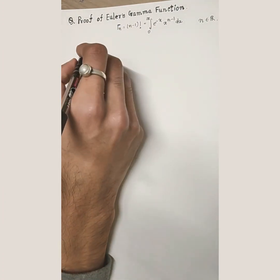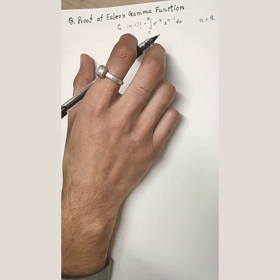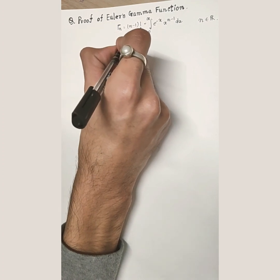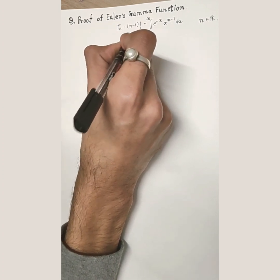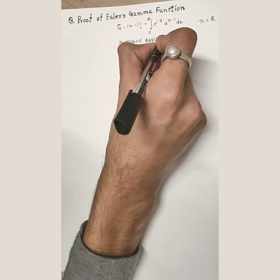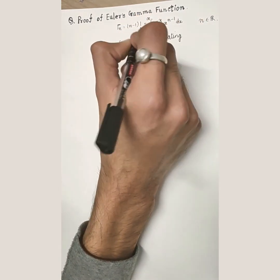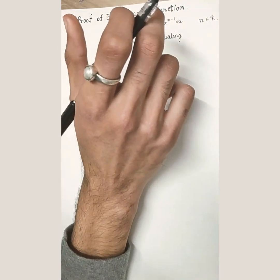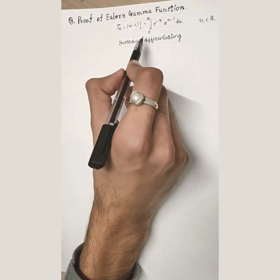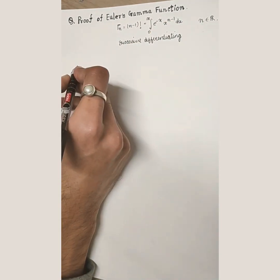So we will be proving Euler's gamma function today using successive differentiation. I will take a very simple function, differentiate it, and try to reach this integral expression. I will use an integral of a function, differentiate it, and try to reach this result.